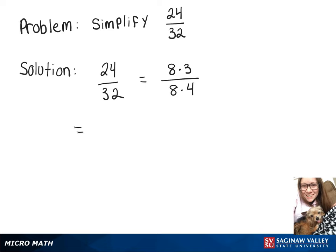Now, we can break those up and rewrite that as 8 over 8 times 3 over 4. And then since 8 over 8 is just 1, that'll just go away. We'll have 1 times 3 fourths, which is 3 fourths.